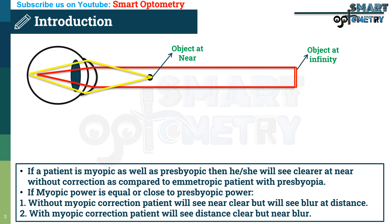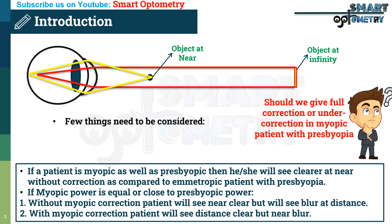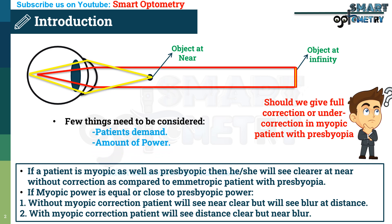Ideally we should correct for both near and distance for clear visual acuity. But the question is: should we give full correction or under-correction in a myopic patient with presbyopia? A few things need to be considered: patient's demand, amount of power, and comfort level with previous glasses.